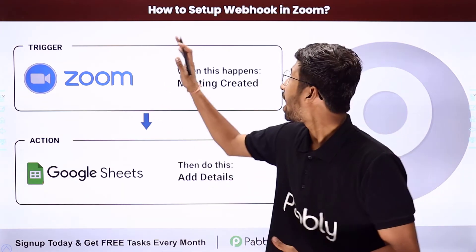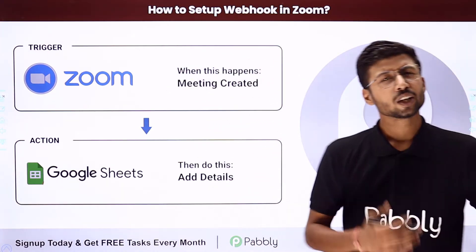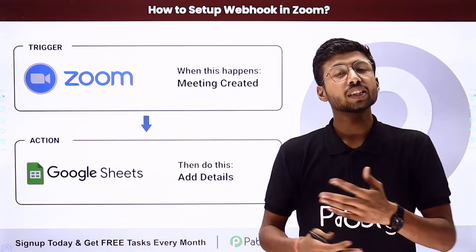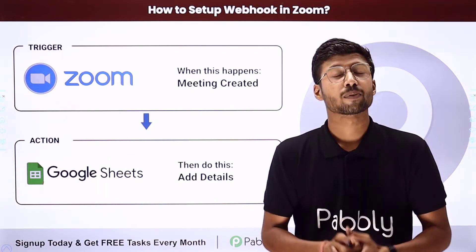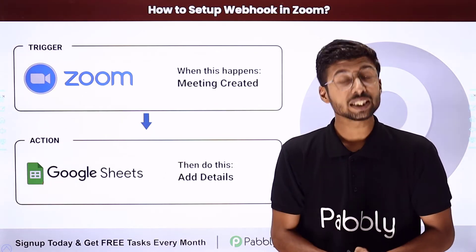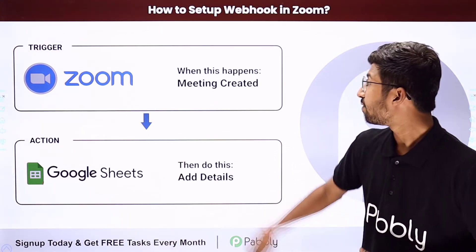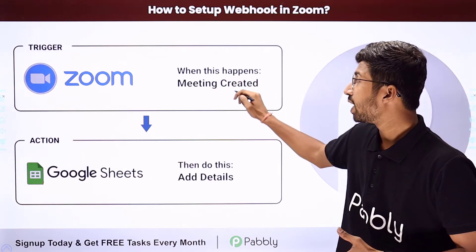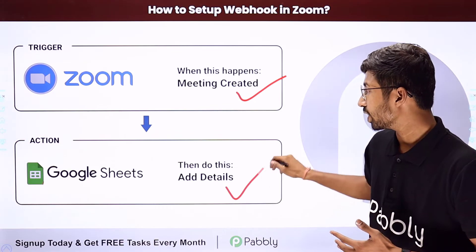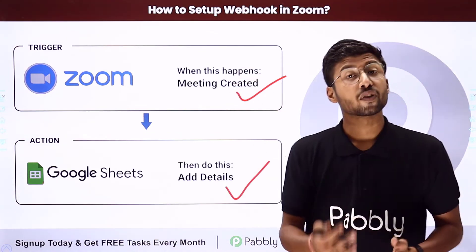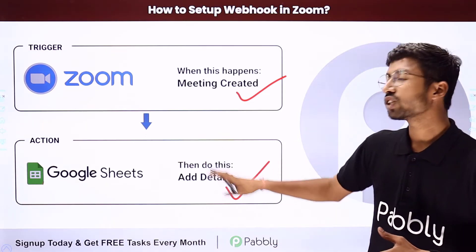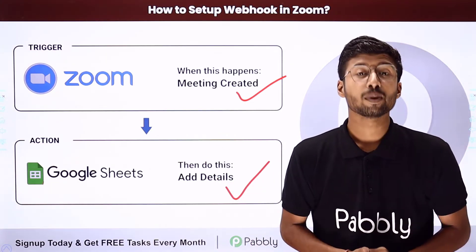In this video we will learn how to set up a webhook in Zoom. A lot of customers were facing issues while adding the webhook URL in the Zoom application, so I will explain the complete process — a step-by-step guide on how to add the webhook URL in Zoom. After that, we will set up a basic automation using Pabbly Connect: whenever a new meeting is created in Zoom, the details will be added into a Google Sheet. The trigger will be meeting creation, and the action will be the addition of meeting details into Google Sheet.